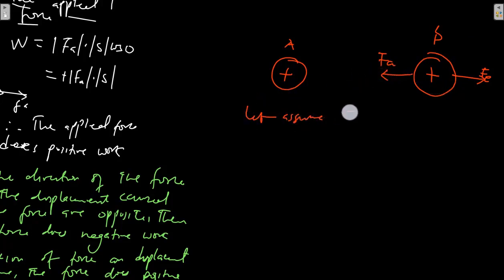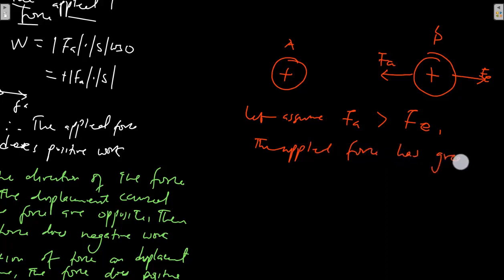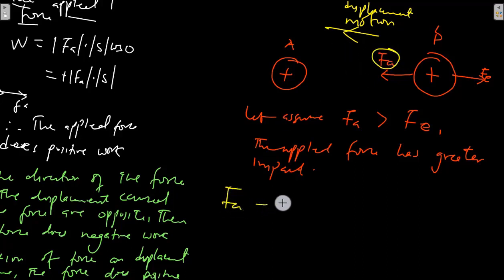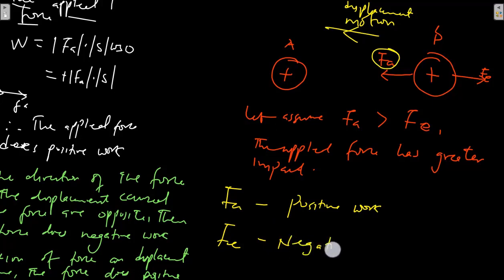Let's assume F_A is greater than F_E, so the applied force has greater impact on the motion. Consequently, the motion is in the direction of F_A and so the displacement is also in that direction. Since the force and the displacement for the applied force are in the same direction, the applied force does positive work, while the electric force — which is caused by the electric field due to charge A — does negative work, because the displacement and the electric force are in different directions.